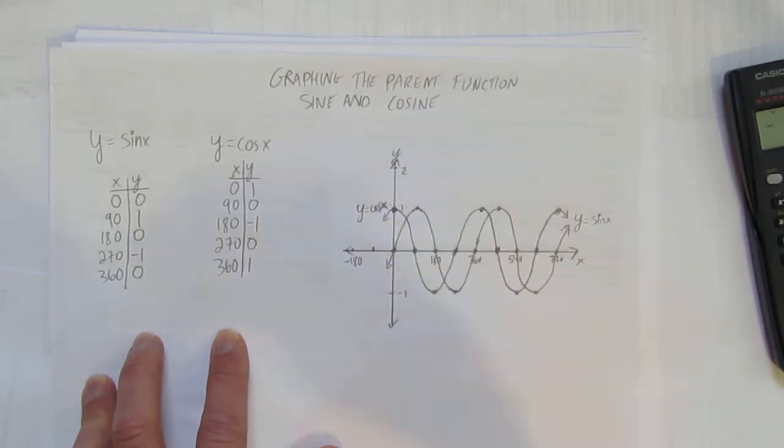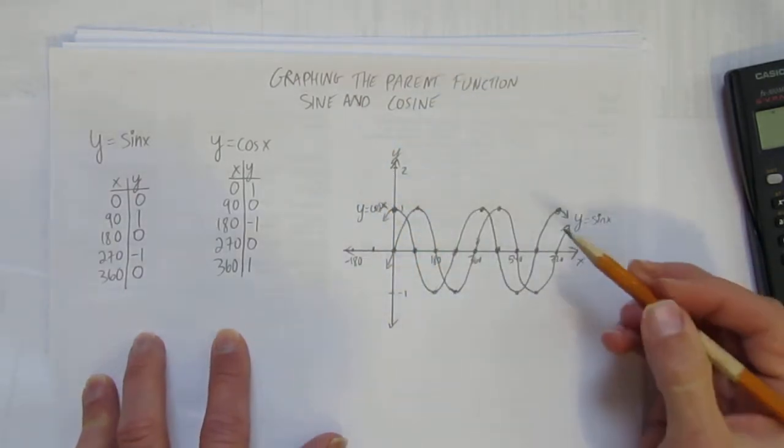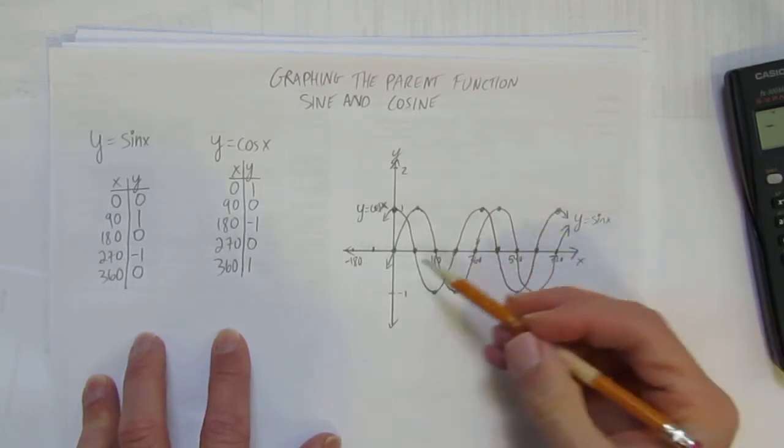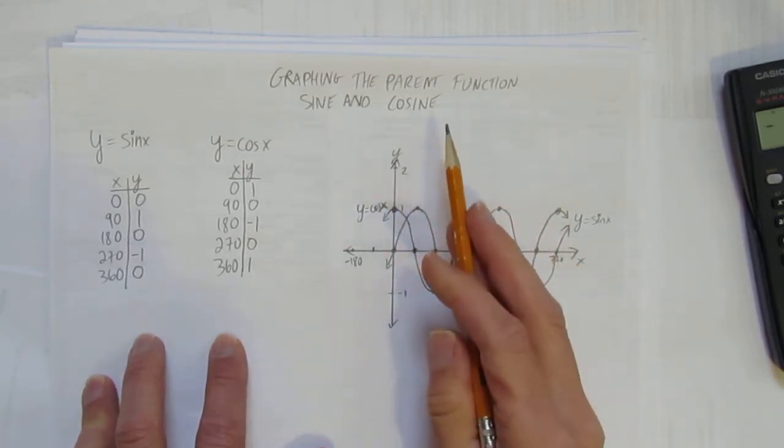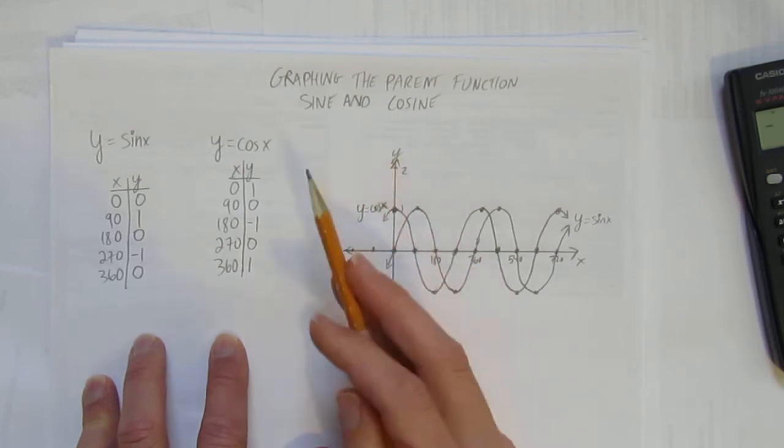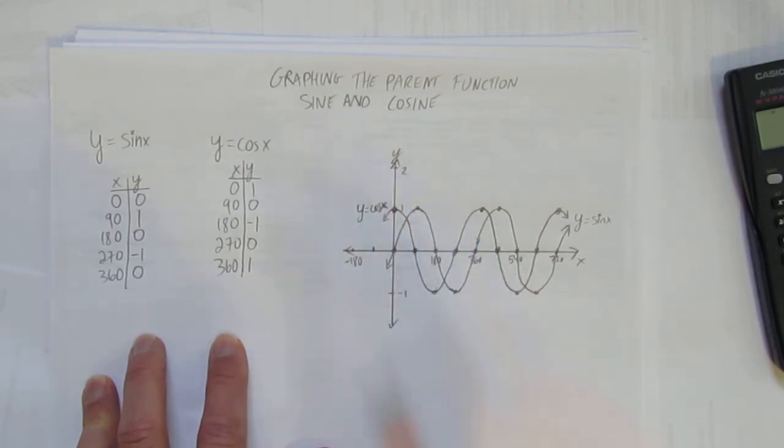You might also notice that cosine and sine are almost the exact same wave, just 90 degrees shifted of each other. That's going to become important later in the work we do. Nevertheless, this video is about graphing the parent function of sine and cosine, both of them sinusoidal functions, both waves.